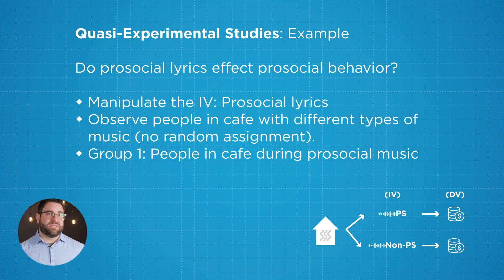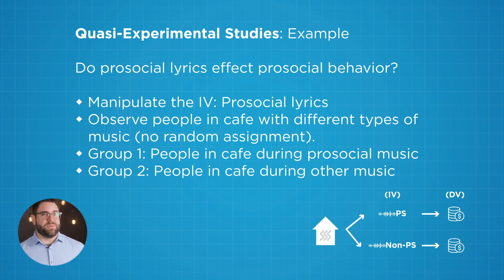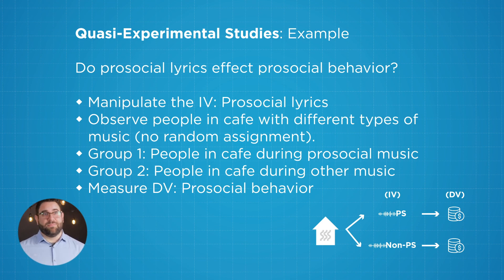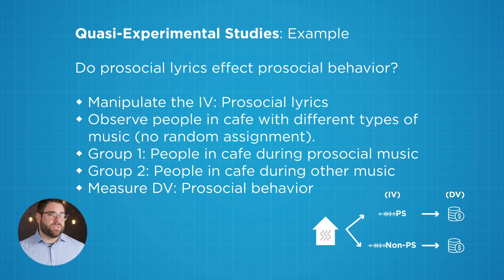After we've done this, we then switch the music to lyrics that are not pro-social — in other words, other music is playing. For all those customers who come in, again not randomly assigned to this condition, we measure their behavior: are they more likely to tip when songs without pro-social lyrics are playing? By doing this, we can see that we have a manipulation of an independent variable — the pro-social lyrics, either songs that had them versus songs that didn't — and the dependent variable is the pro-social behavior, in this case tipping. We can then compare how people responded in group one versus group two and measure that difference. This would be a great example of a quasi-experimental study.